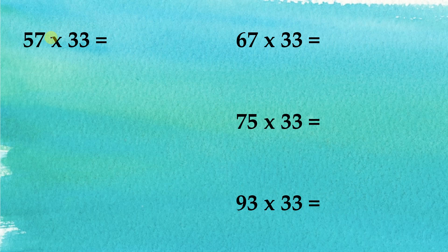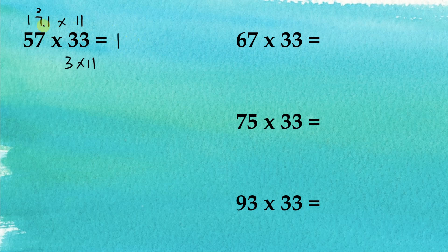Now, how about multiplying numbers by 33? 33 equals 3 times 11, so we multiply the number by 3 first, then by 11. For 57 multiplied by 3: 3 times 7 is 21, and 3 times 5 is 15, plus 2 carries, giving 171. Now 171 multiplied by 11: the first digit is 1, the second digit is 8, the third digit is 8, and the last digit is 1, giving 1881.